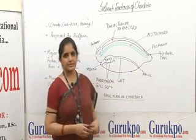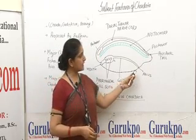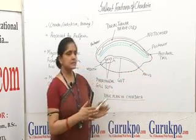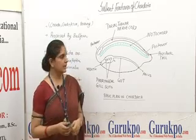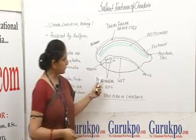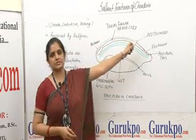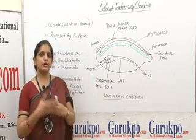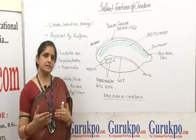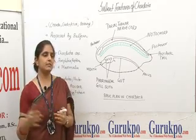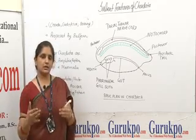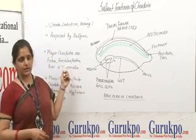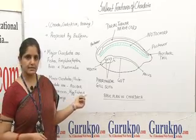All chordates have a tail, and that tail is in a post-anal position — that is, it is present after the anus. If these main characters are present in either the larval stage, adult stage, or throughout the lifetime, then that animal will be a chordate.